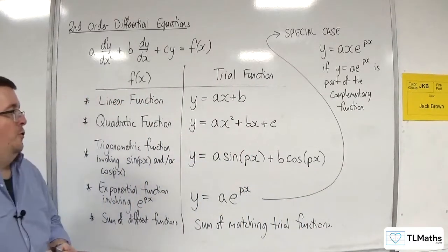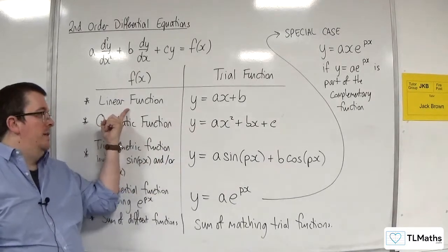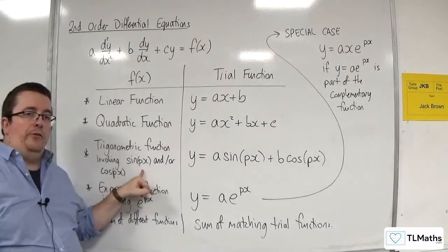So, for example, if you had 8x plus 3 plus 6 cosine x,